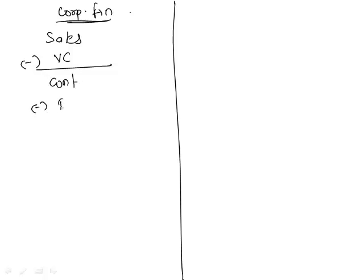Now try to understand this. When we studied corporate finance, we prepared an income statement. The format of that income statement was sales minus variable costs, which gave us contribution minus fixed cost EBIT minus interest, which gave us EBT and minus tax, which gave us EAT.